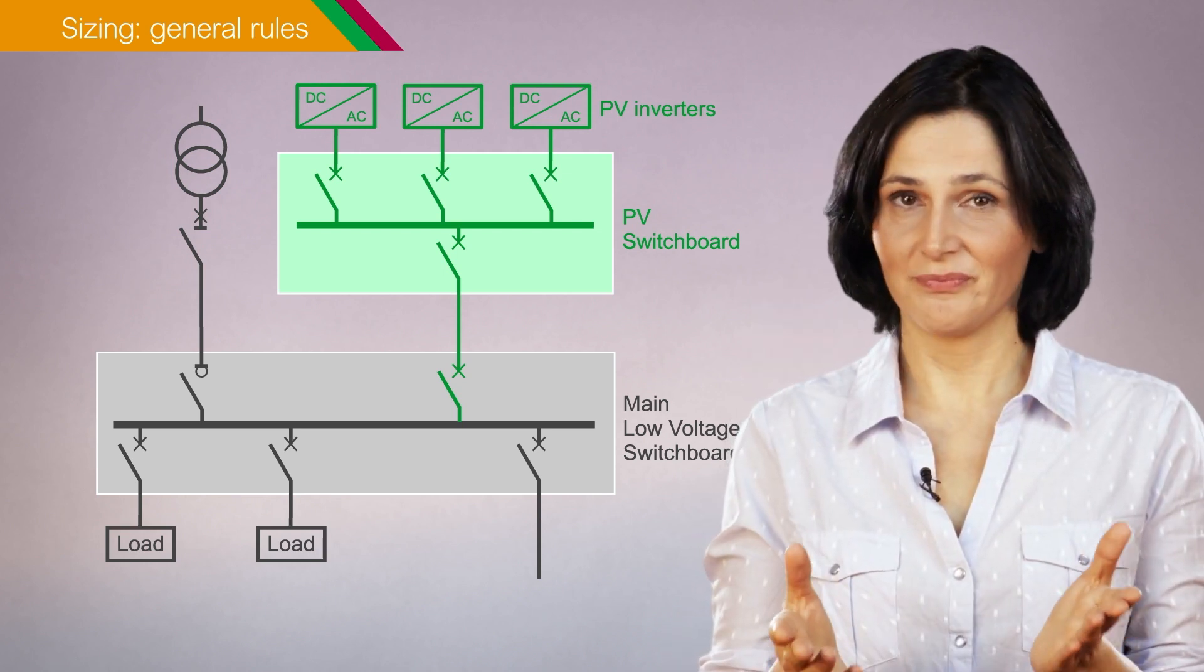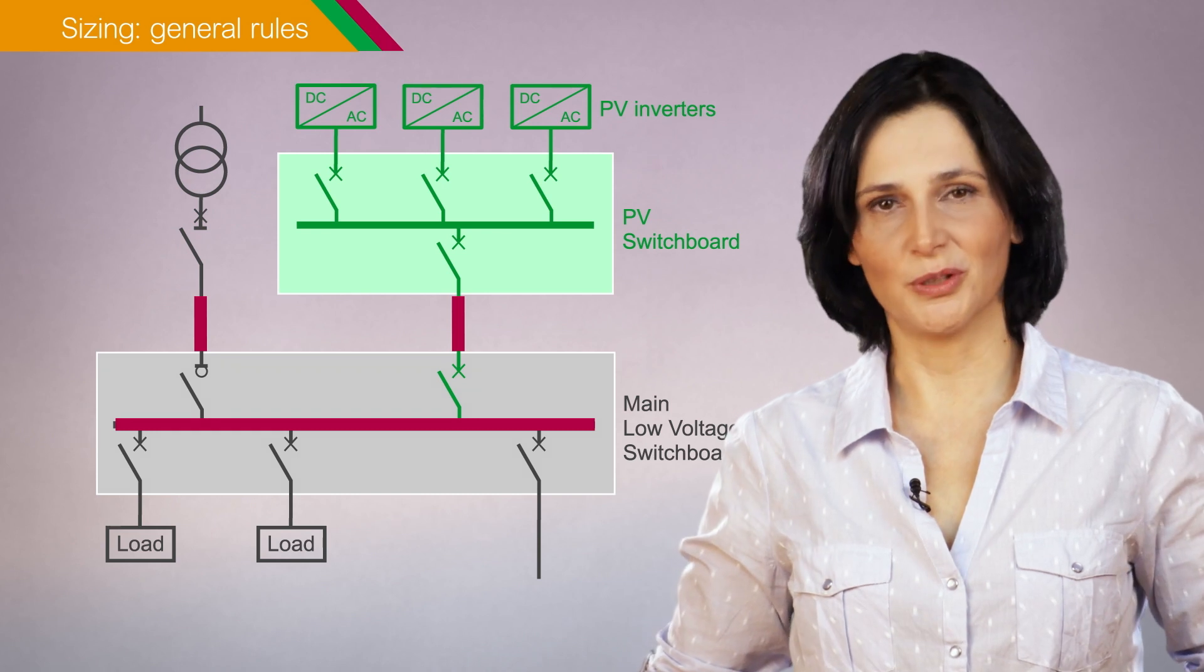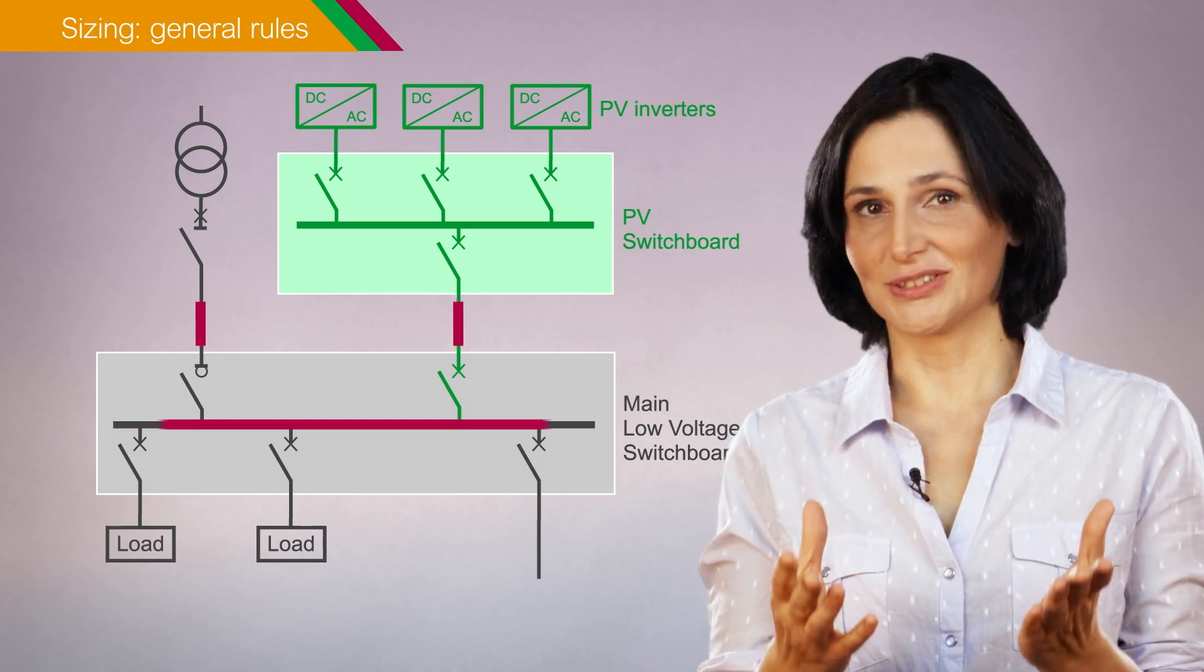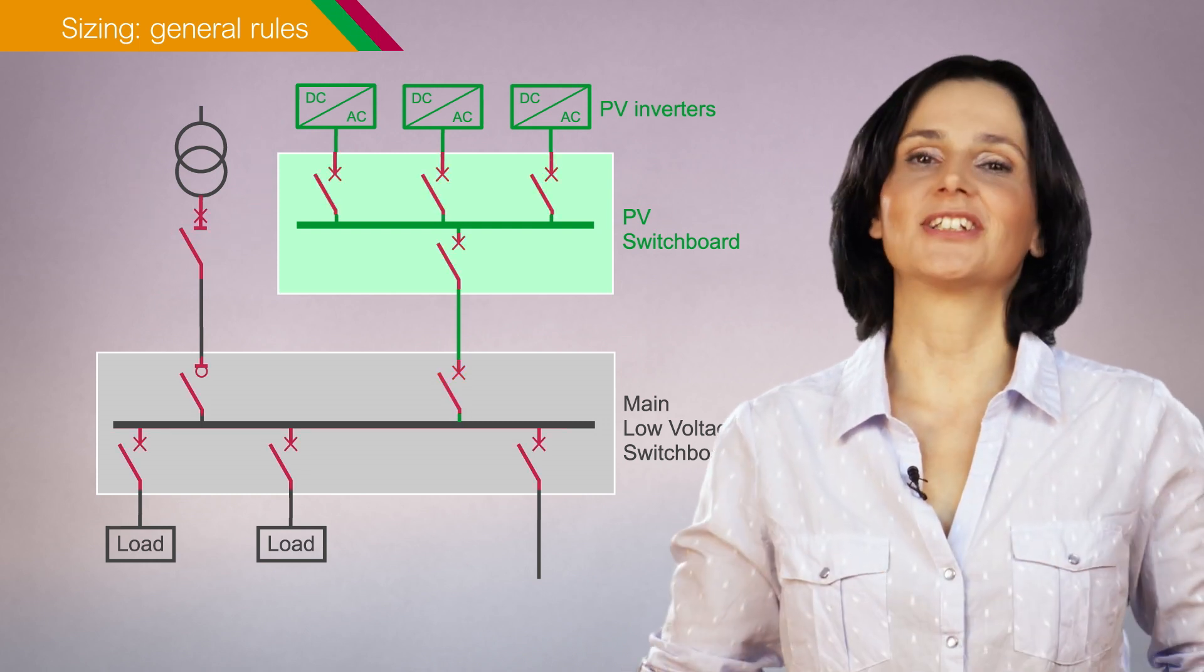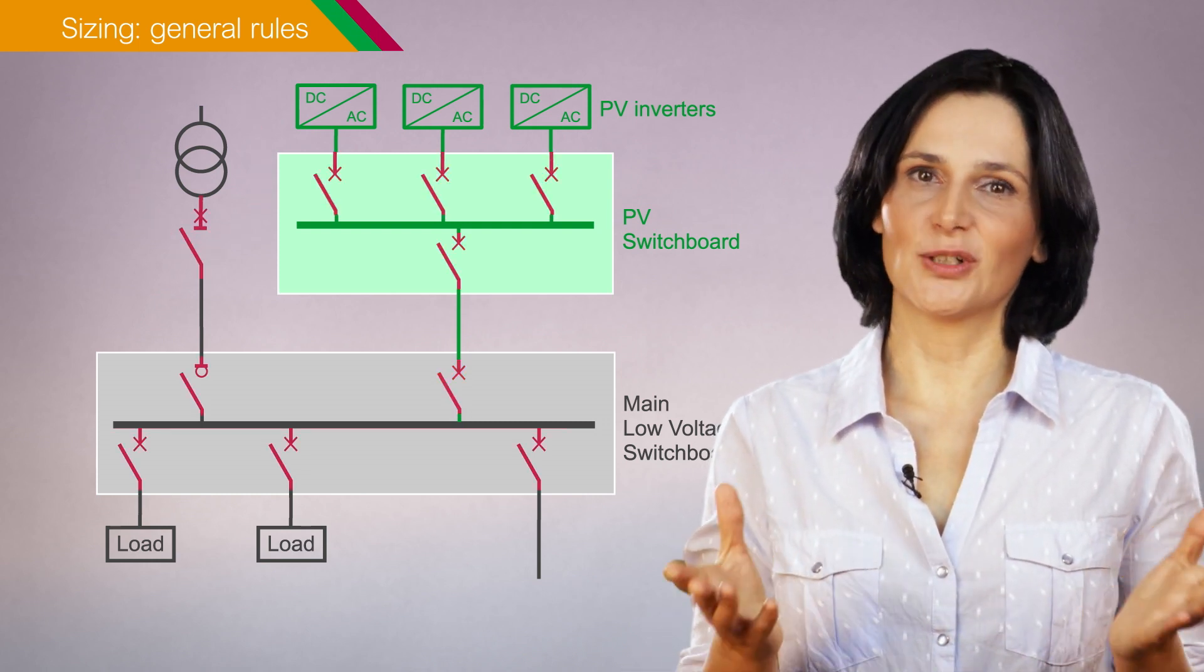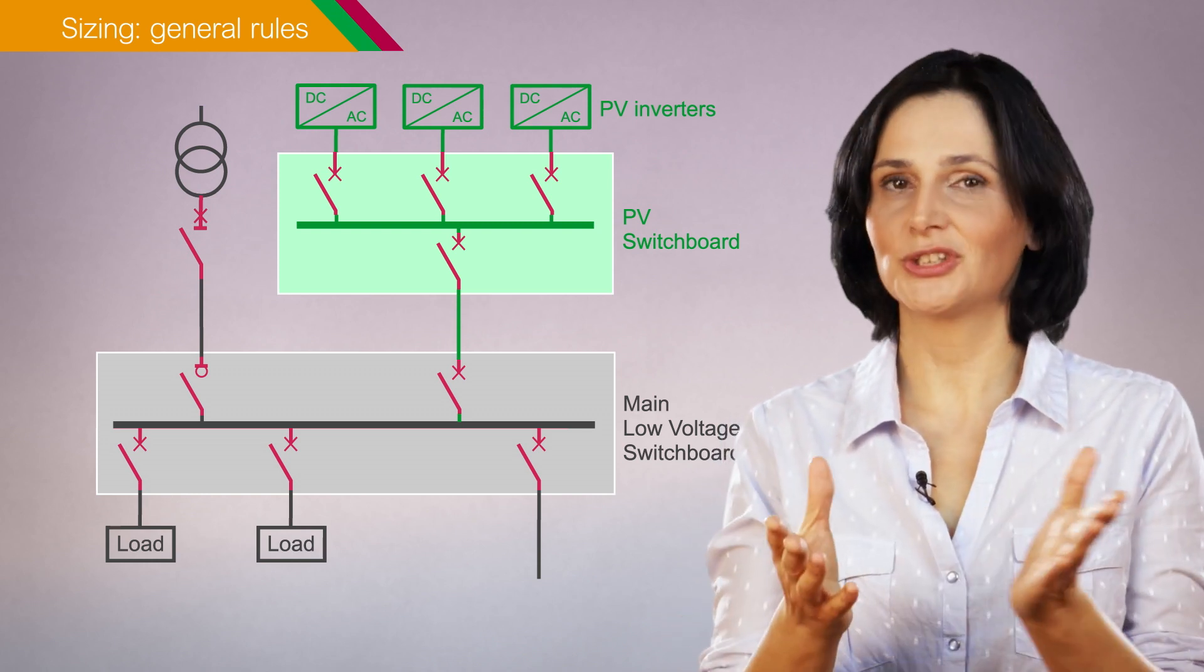For example, cables and busbars are sized based on maximum load current. Transformers are sized based on maximum power flow. And protection devices are selected according to maximum load current and minimum and maximum short-circuit currents.